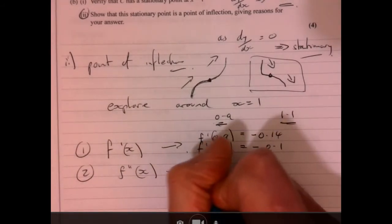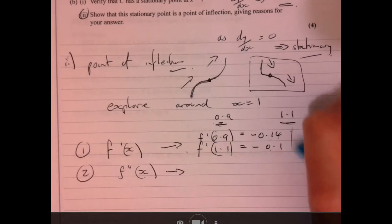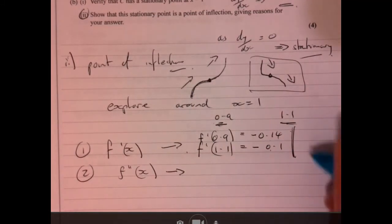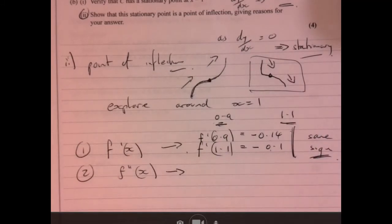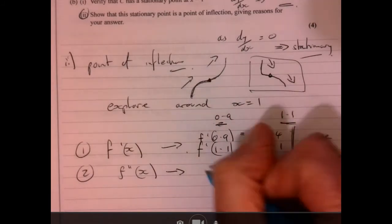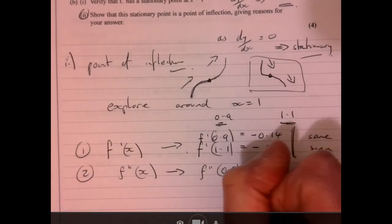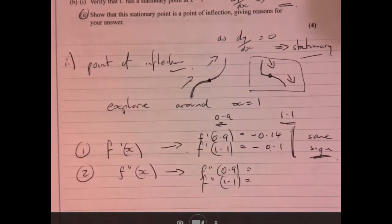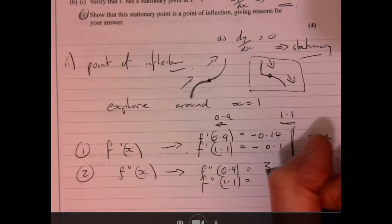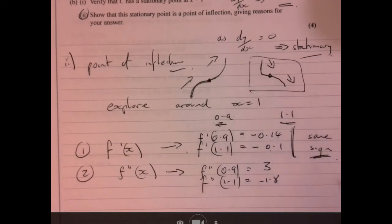What about this? What happens here? So if I did this, you would just need to say same sign, okay, same direction of gradient. If I do this one, if I do this one on the other hand, if I work these two values out either side, right, so you've got to explore either side, and then we get 3 and we get minus 1.8. So what's happened here?